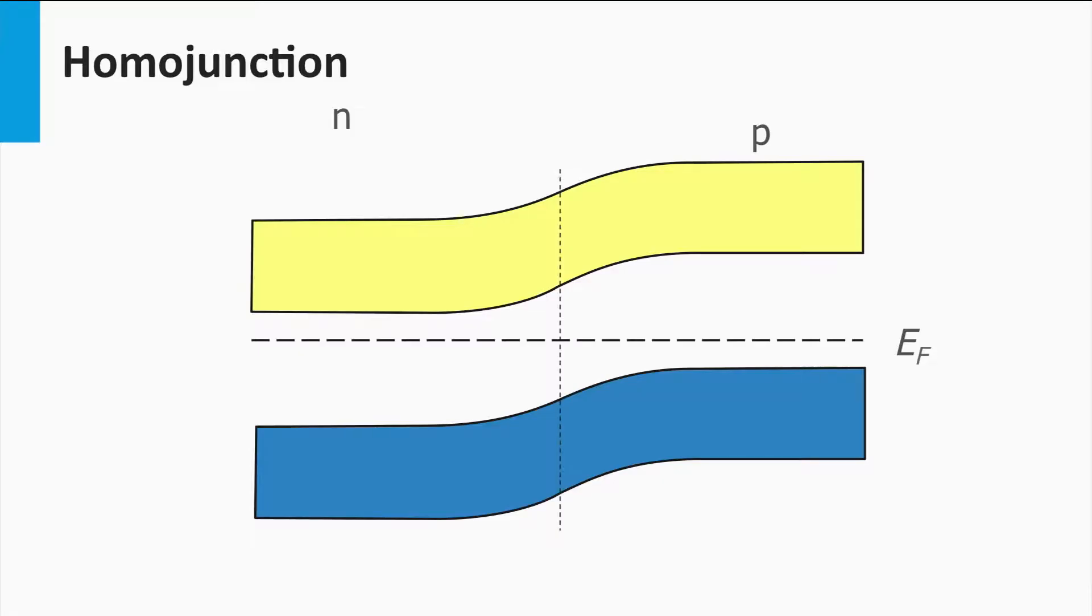So far, I have introduced you to the concept of P-N junctions with a depletion zone. These junctions are fabricated by different doping types within the same semiconductor material. This means the band gap in the P-N doped material is the same. Such P-N junction is called a homojunction.